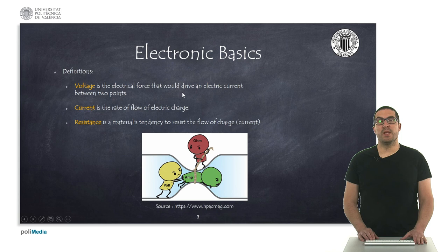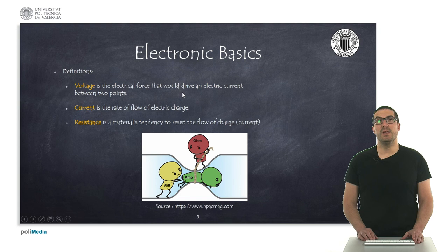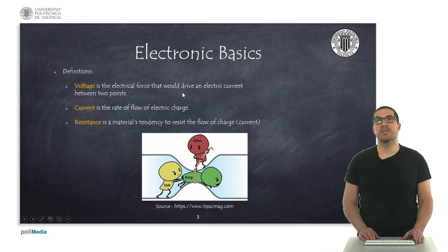Let's start with some definitions. In electronics we have three main definitions: voltage, current, and resistance. The voltage is the electrical force that drives current from one point to another in a circuit. The current is the rate of flow of the electrical charge — it's the speed at which this electrical charge moves. And resistance is the tendency of a material to oppose or resist that flow of charge.